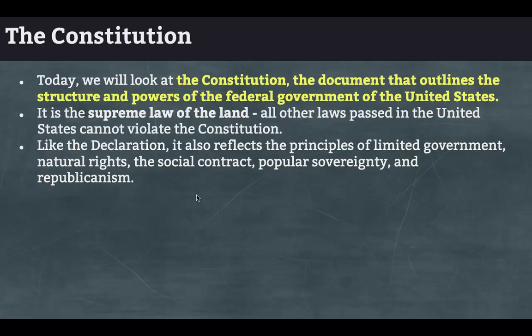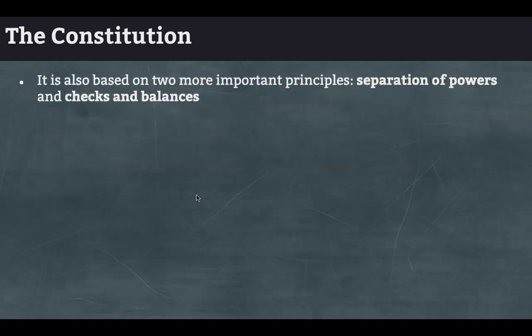Today we'll look at the Constitution, which is the document that outlines the structures and powers of the federal government of the United States. It is the supreme law of the land — that's the traditional definition. All laws passed in the United States cannot violate the Constitution. If California passes a law that doesn't line up with the Constitution, the Supreme Court can strike it down. Like the Declaration of Independence, the Constitution reflects limited government, natural rights, social contract, popular sovereignty, and republicanism. It's also based on two more important principles: separation of powers and checks and balances.